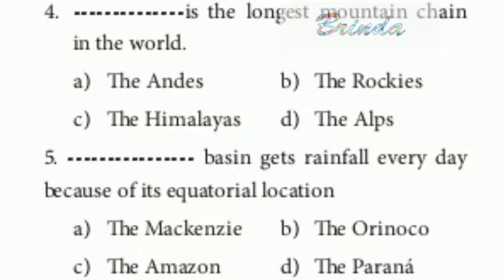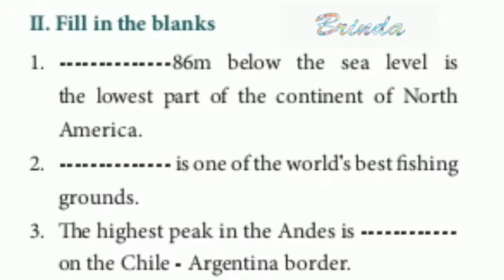Moving on to fill in the blanks. First: 86 meters below sea level is the lowest part of the continent of North America. The answer is Death Valley, 86 meters below sea level. Second: dash is one of the world's best fishing grounds. The answer is Grand Bank.